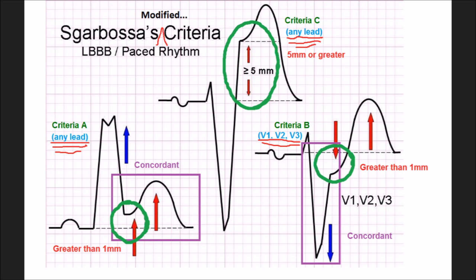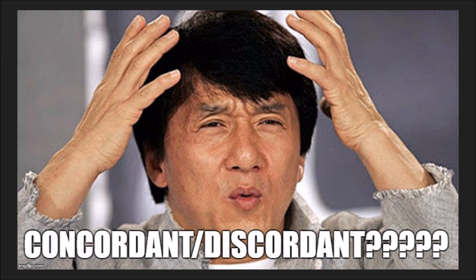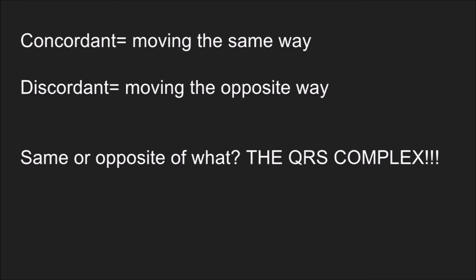Criteria C used to be 5 millimeters or greater. What we know now is we need to measure the ST/S ratio, which is denoted by the little lines that look like you would cut with a pair of scissors on here. And that height of that section needs to be 25% of the QRS complex height or greater in order to be considered positive for Sgarbossa's criteria. So, what is concordant and discordant? The answer is concordant is moving the same way and discordant is moving the opposite way.